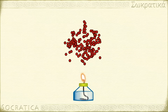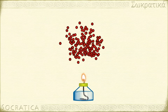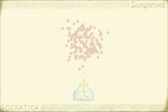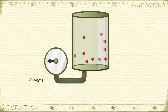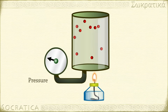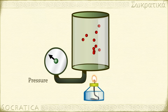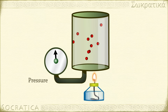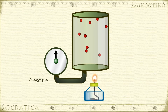If you heat up a gas, the gas particles move faster. If the gas is in a solid container with fixed volume, this means that the faster the gas particles move, the more times per second they collide with the sides of the container. That registers as increased pressure.